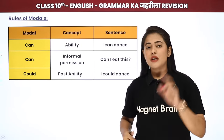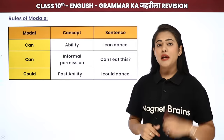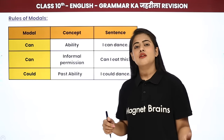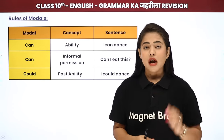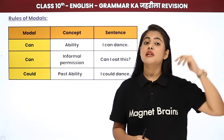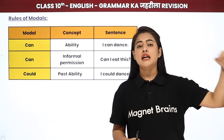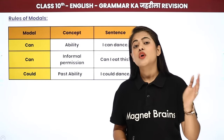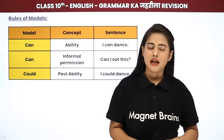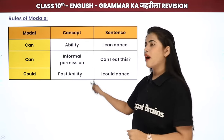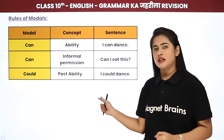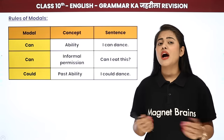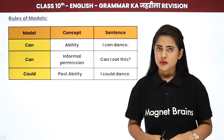Next aata hai COULD. Kai baar aapke passage ya paragraph mein past ki cheezein chal rahi hoti hain — ab aapko past mein kisi ki ability ya inability batani hoti hai. Tab aap COULD ka istemal kar sakte ho. So COULD is past ability — for example: 'I could dance, but right now I am not able to.' Clear?